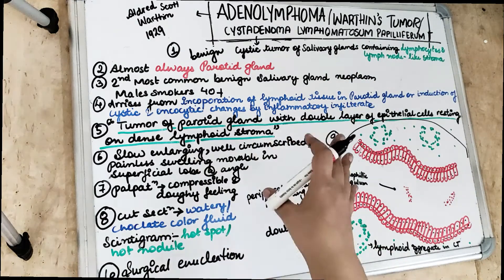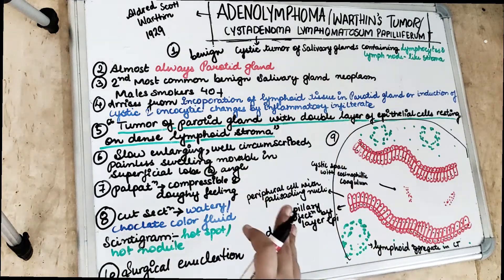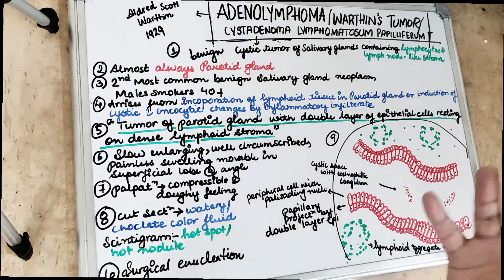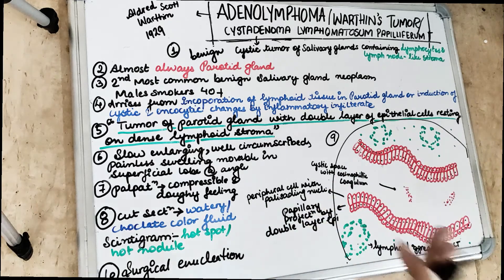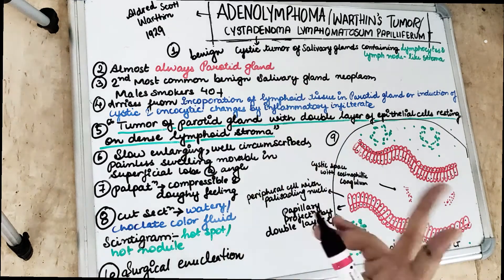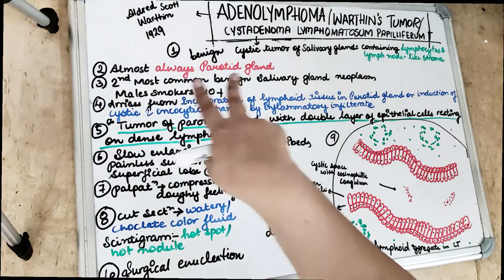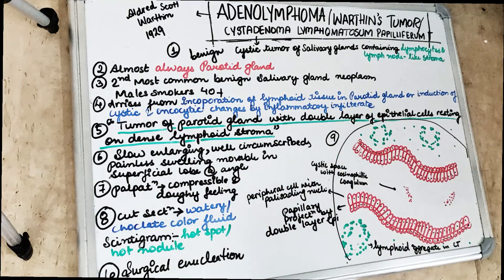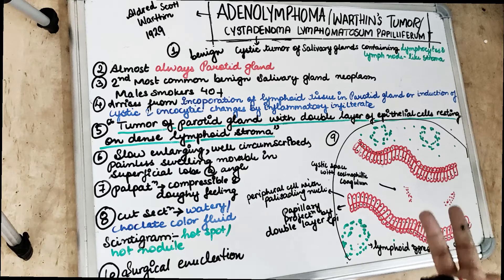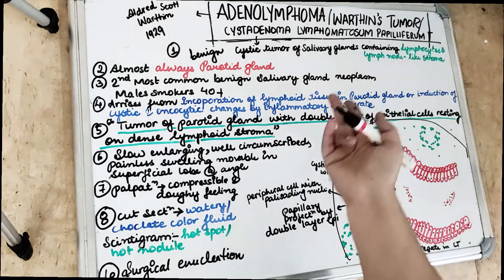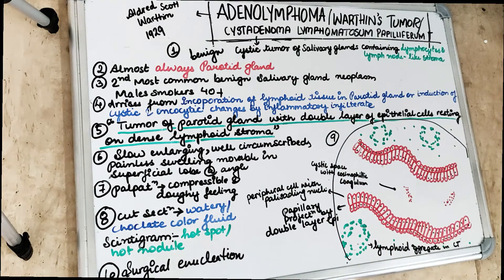As the name adenolymphoma suggests, the presence of lymphocytes is the most important thing to remember. The second important point is that it almost always involves the parotid gland. The suffix '-oma' means it is a benign tumor. Treatment: we perform surgical enucleation for adenolymphoma.